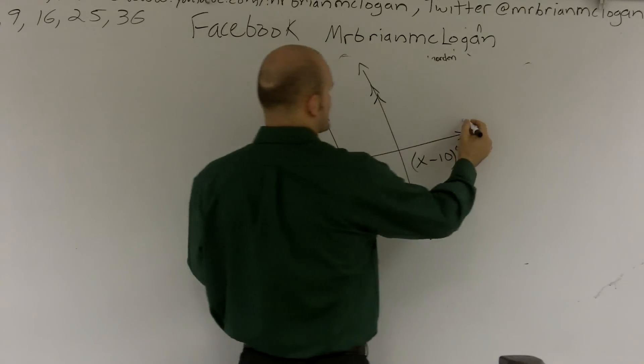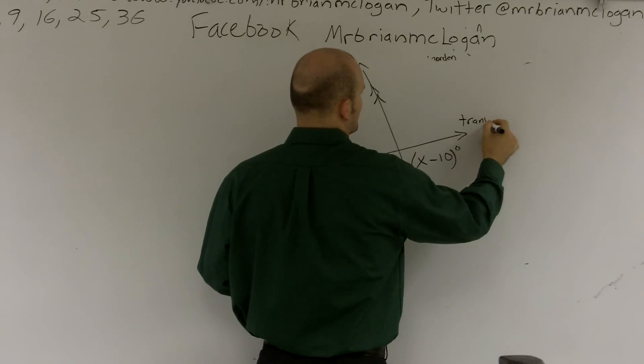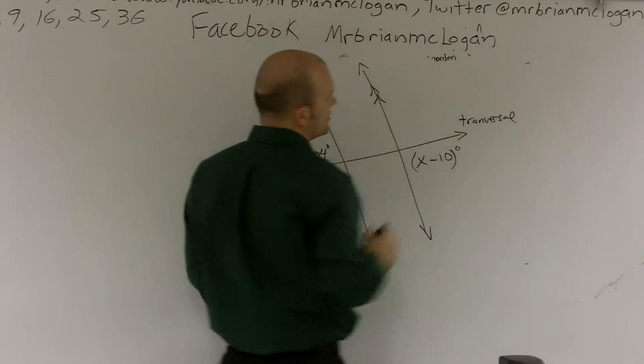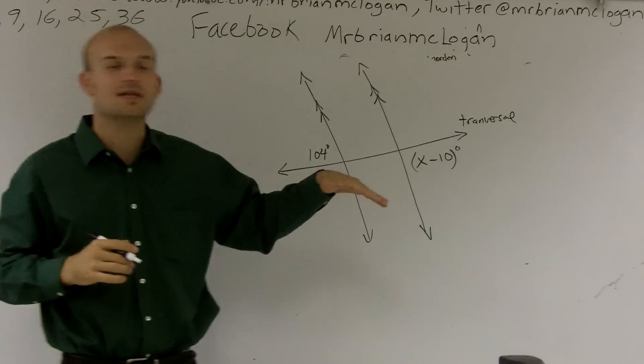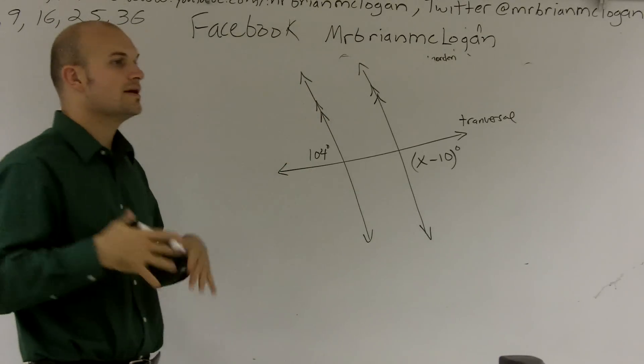And then this line that's crossing is what we call a transversal. All it is is another line segment. Whenever a line segment intersects parallel lines, we're given a transversal.